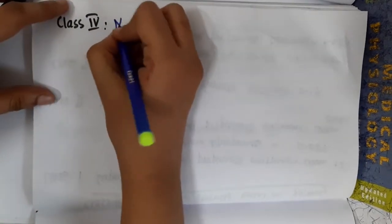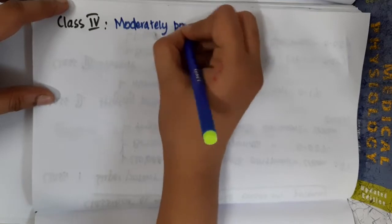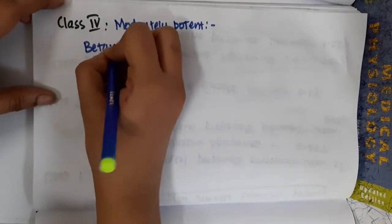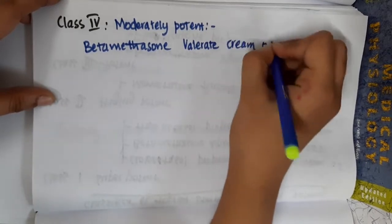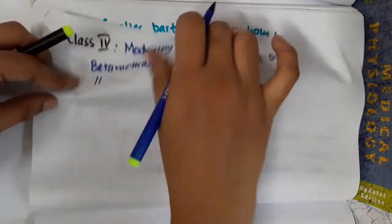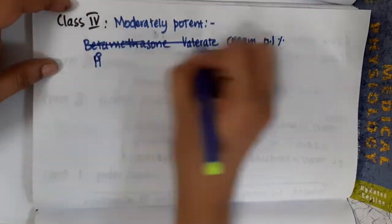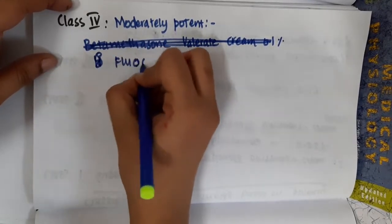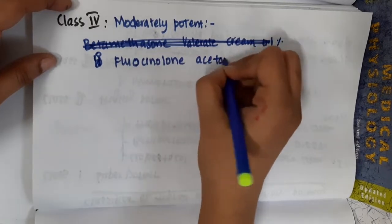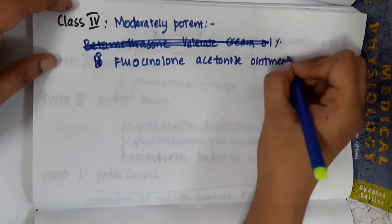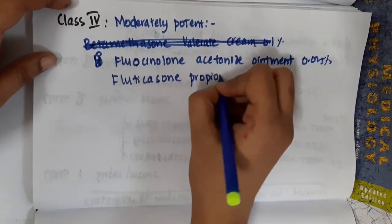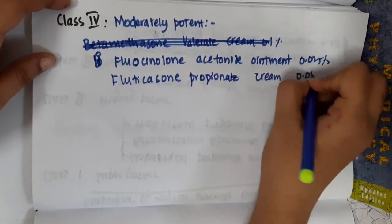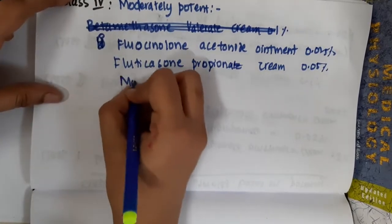Class 4 is moderately potent. This includes betamethasone valerate cream at 0.1%, fluocinolone acetonide ointment at 0.025%, fluticasone propionate cream at 0.05%, and mometasone furoate cream at 0.1%.